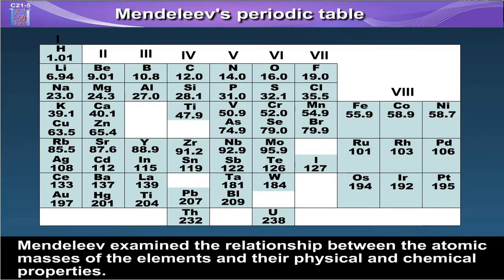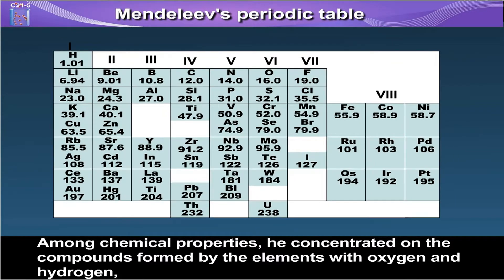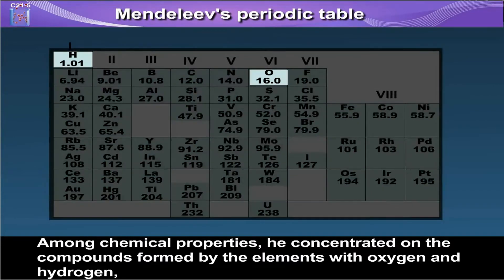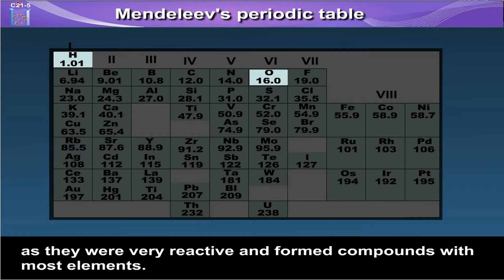Mendeleev examined the relationship between the atomic masses of the elements and their physical and chemical properties. Among chemical properties, he concentrated on the compounds formed by the elements with oxygen and hydrogen, as they were very reactive and formed compounds with most elements.